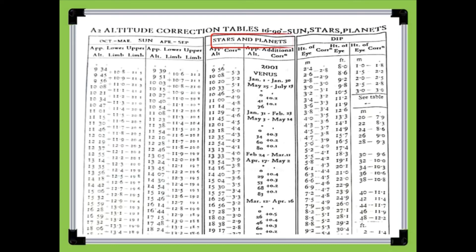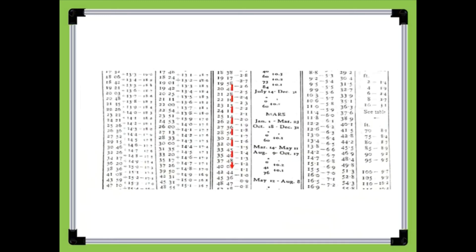Using the altitude correction table of the sun, stars, and planets from the nautical almanac, locate the stars and planets column. Under the stars and planets column, locate the apparent altitude correction column. Move down until the range of 45 degrees 36 minutes to 48 degrees 47 minutes is found. The apparent altitude is in between this apparent altitude range, and the corresponding apparent correction can be found.